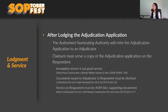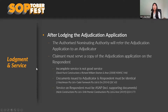Second: documents issued to the adjudicator and the respondent must be identical. An application was lodged and the claimant provided an additional email — site instructions explaining a delay — to the adjudicator through the nominating authority, but a copy of that email wasn't provided to the respondent. The respondent appealed, and the court found there was a failure to comply with natural justice — the determination was void, because had the respondent been aware, he could have objected to the email.